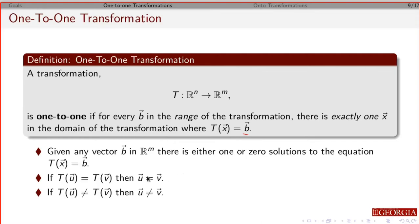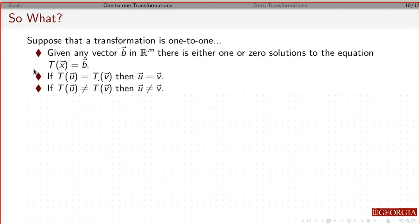Another way to look at this: if T(u) equals T(v), and T is one-to-one, the only way that can be true is if u equals v. Likewise, if T(u) is not equal to T(v), then u can't equal v. So a property that comes out of this is that if the transformation is one-to-one, then for any b there is either one or zero solutions to the equation — it's not possible to have infinite solutions.